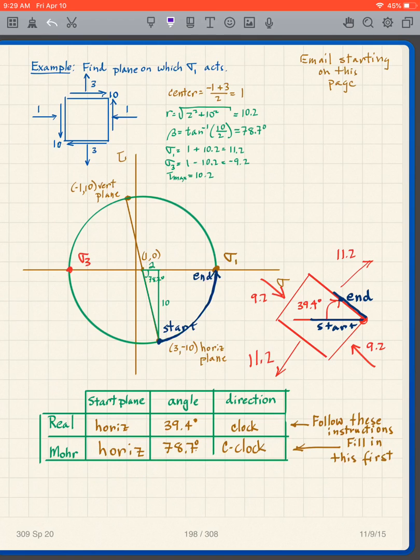So now I work this in reverse. That's horizontal, that's horizontal, that's this Mohr world angle. Divide by two to get the real world angle. I flip the directions.